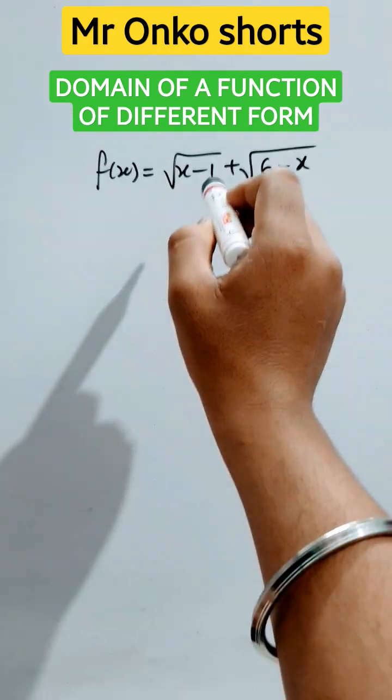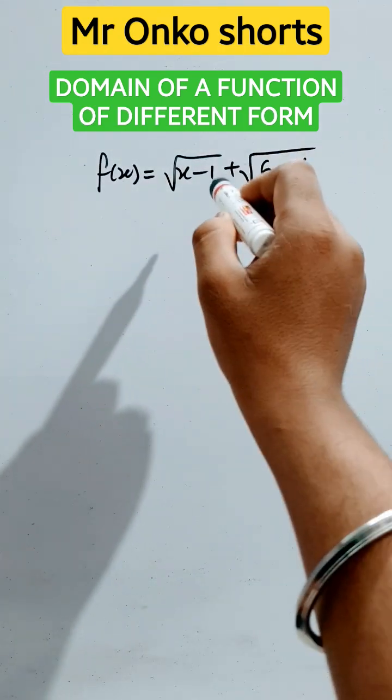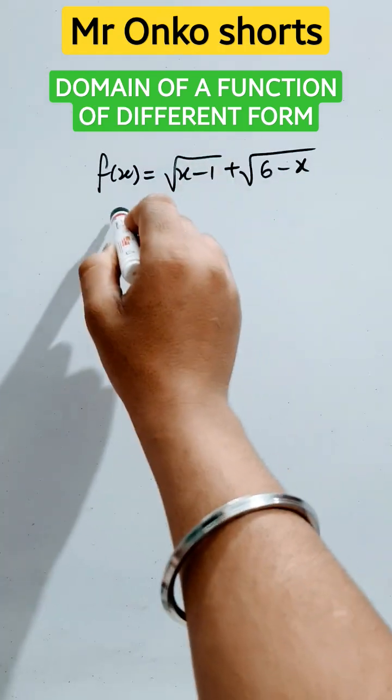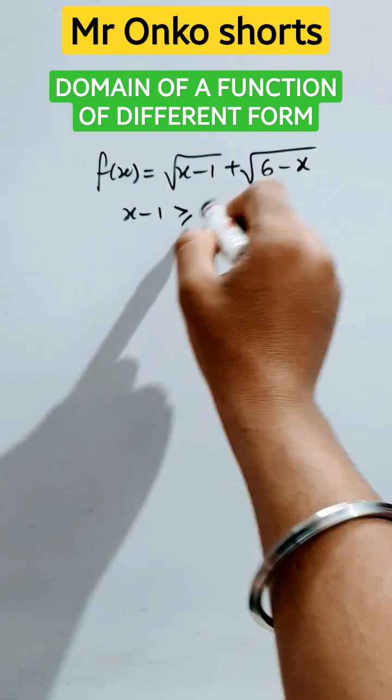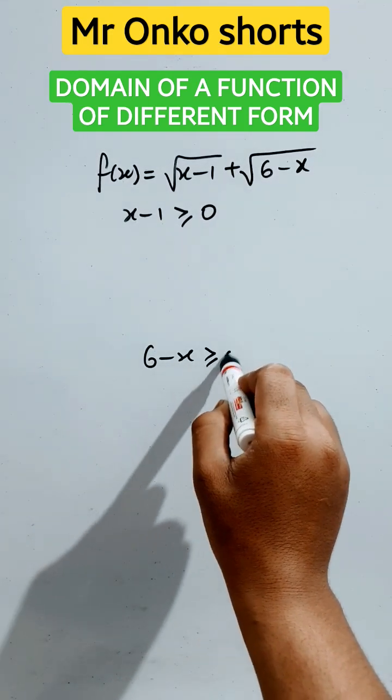First of all, just observe the individual functions carefully. This is under square root, so this must be greater than or equal to zero. And this is also under square root, this must be greater than or equal to zero.